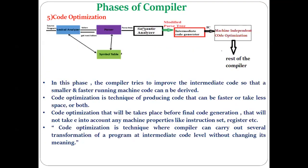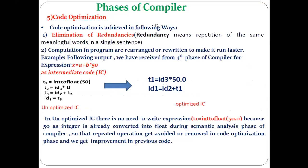Code optimization is achieved in the following ways. One important way is elimination of redundancy — removing redundant code from your program. Redundancy means repetition of the same code within a program. The code which is present in the program, but even if it were not there the program would still work correctly, is called redundant code. So elimination of redundancy means removing unwanted or repeated code from your program.